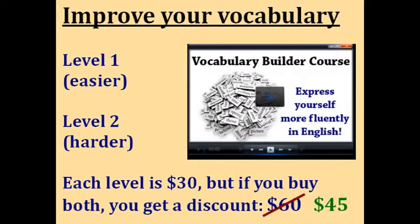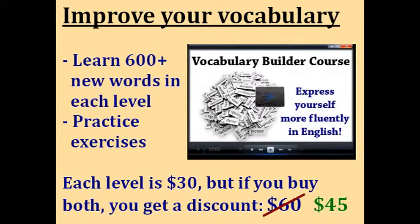Each level of the course is $30 — $30 for level one and $30 for level two, as they are two completely different courses with new material in each one. But the special offer for those who attended today's webinar is that if you buy both levels together, you get a discount: instead of paying $60, the price is only $45. So you can buy level one for $30, only level two also for $30, or both levels together for the discounted price of $45. In each level, you'll learn more than 600 new words, and there are also exercises to practice that vocabulary so you don't forget it.